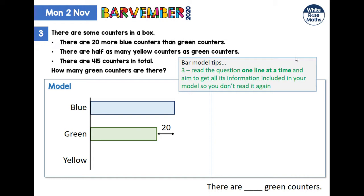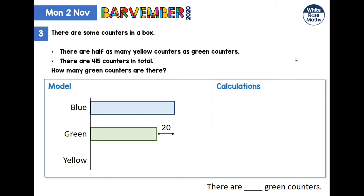Let's go one line at a time. Is everything from that first line in my model? 'There are 20 more blue counters than green counters.' Yes it is — I don't need to read it again, so I'm going to get rid of it. Next: there are half as many yellow counters as green counters. So I've halved the green bar and put in a yellow bar below it.